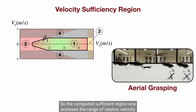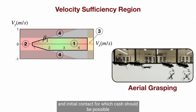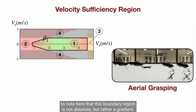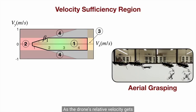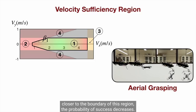So the computed sufficiency region 1 encloses the range of relative velocity at initial contact for which a catch should be possible. To note here that this bounded region is not absolute, but rather a gradient. As the drone's relative velocity gets closer to the boundary of this region, the probability of success decreases.